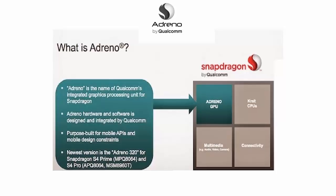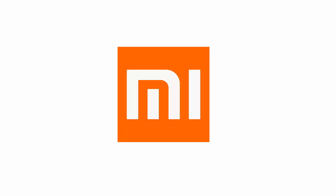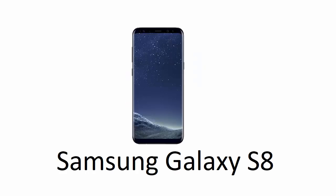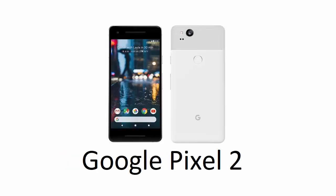Now let's talk about Adreno. Adreno is the name of the GPU series developed by Qualcomm for use in their SoCs. Companies like Xiaomi, LG and some Samsung phones use Adreno GPUs, and even the Google Pixel uses an Adreno 540 GPU.